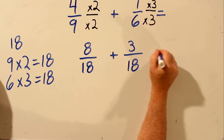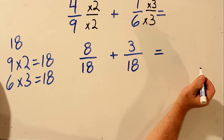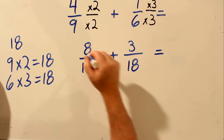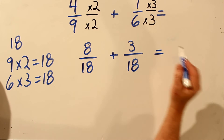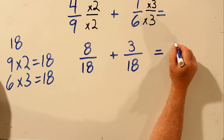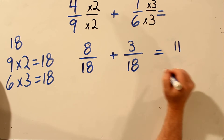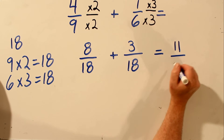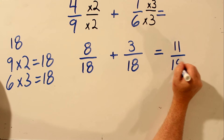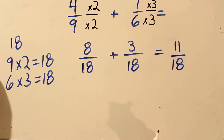And now we can add these two fractions. In order to add the two fractions, you add the two numbers on top: 8 plus 3 is 11. And keep the bottom number the same. 11 over 18 is the answer.